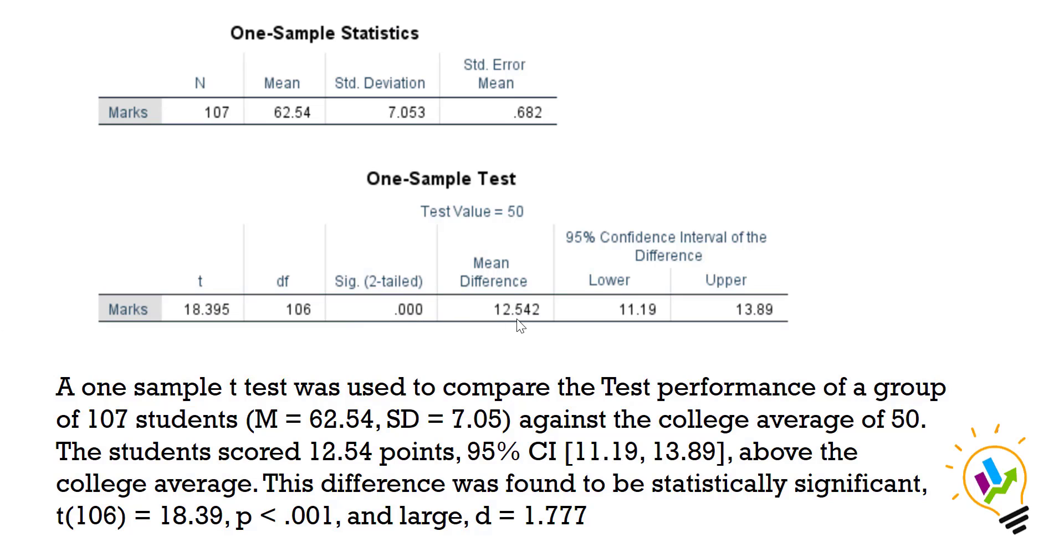The mean difference is 12.542. The 95% confidence interval lower is 11.19 and upper is 13.89.